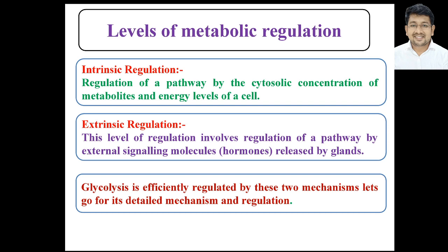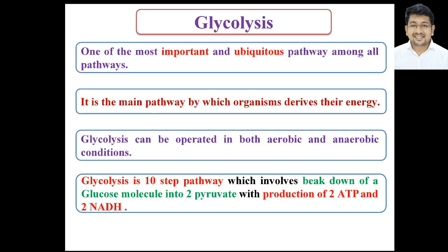We are going to see one example of glycolysis, which is highly and efficiently regulated by both intrinsic and extrinsic regulation. Glycolysis is a very important pathway in living systems, carried out in the cell cytoplasm. It is one of the most ubiquitous pathways among all metabolic pathways — important because it provides energy for all living organisms and ubiquitous because it is present in all organisms, from bacteria to humans. It is a 10-step pathway that degrades glucose into two pyruvate molecules, producing two ATP and two NADH.